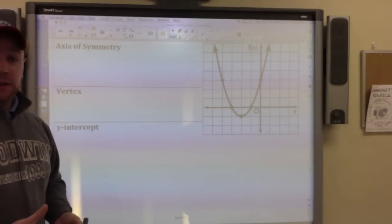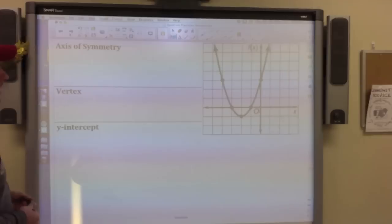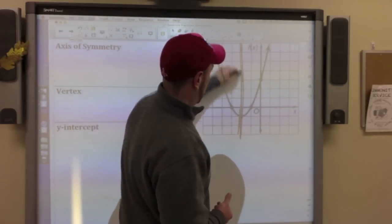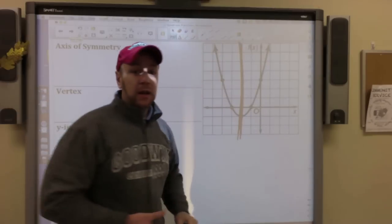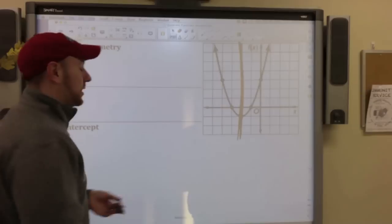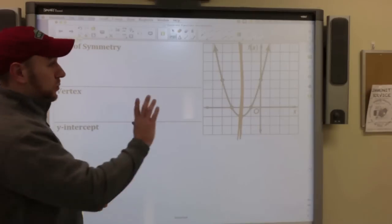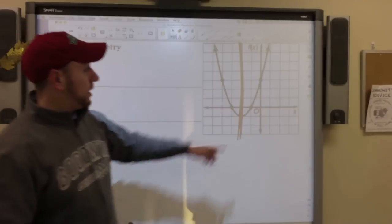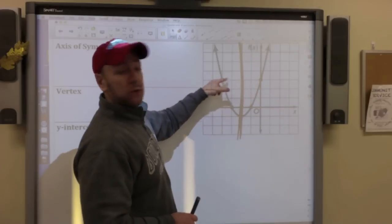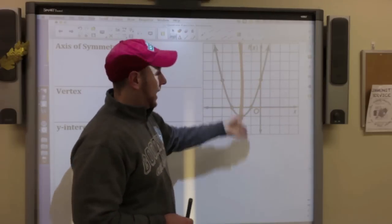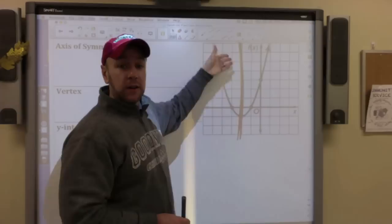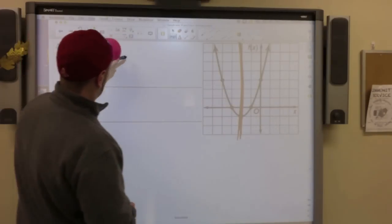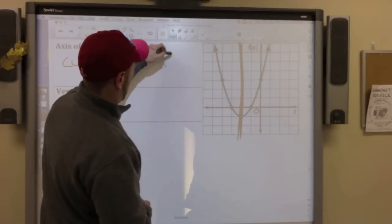In a graph, we have various parts. The axis of symmetry, that is where this u shape is cut right in half. If you remember anything about symmetry from geometry, it's where something is reflected. So if you notice, this point and this point are both two units away from that axis of symmetry. It cuts the graph right in half.